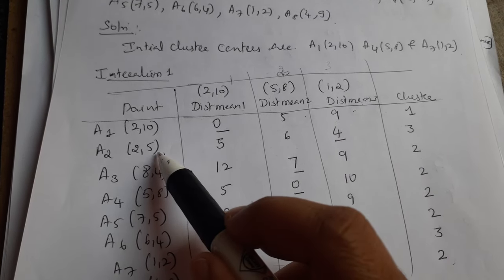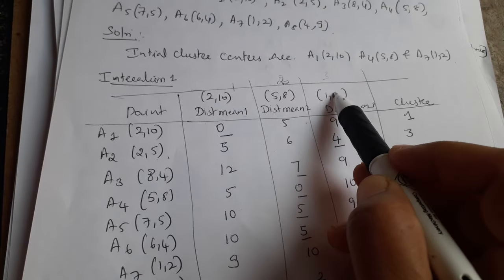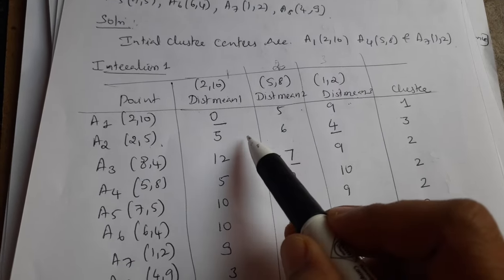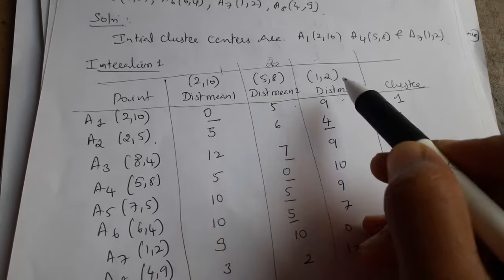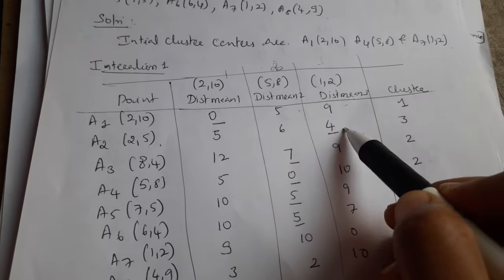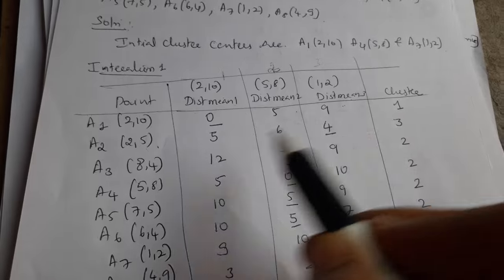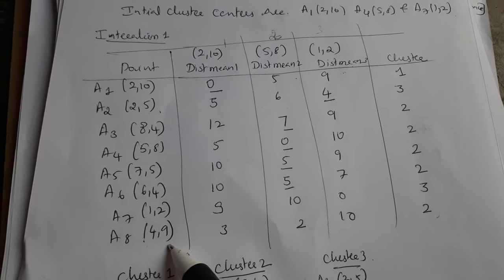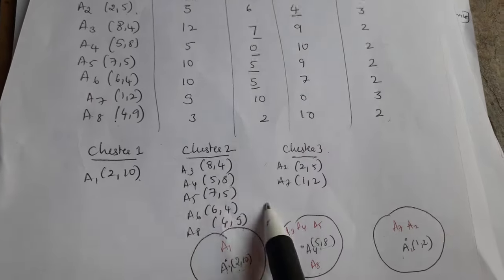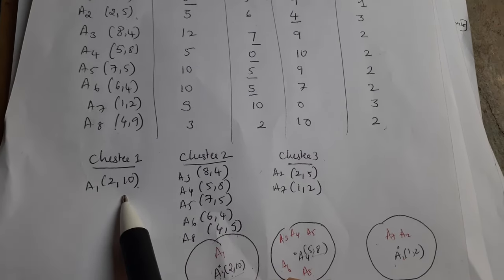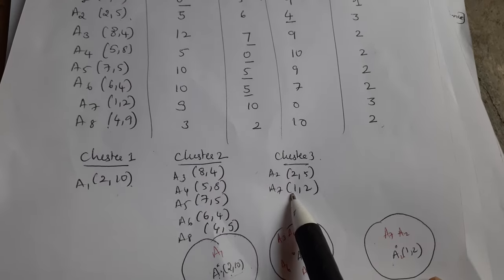Similarly, for the next data point, check whether it is nearer to cluster 1, 2, or 3 using the Euclidean distance formula — we get distances of 5, 6, and 4. Since 4 is the minimum, A2 is nearest to the third cluster center and is assigned to cluster 3. Calculate for all data points likewise. After doing so, cluster 1 has one data point, cluster 2 has five data points, and cluster 3 has two data points.